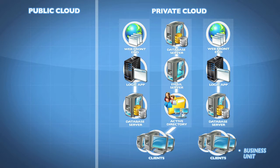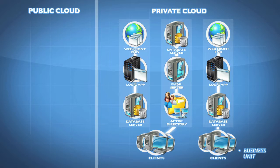In my world, business units might be things like an investment banking division versus a retail division versus a fixed income or private wealth management division. Each business unit may have a different need for the exact same application, but we're not going to give them the same servers. In a cloud model, they're going to essentially subscribe — they become a subscriber for a service. In a private cloud, these would just be servers in our own data center that we make available to our end users and business units.